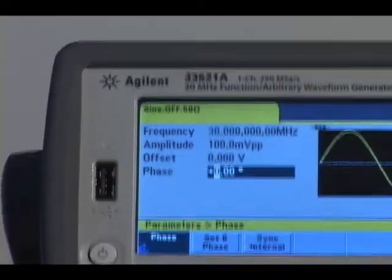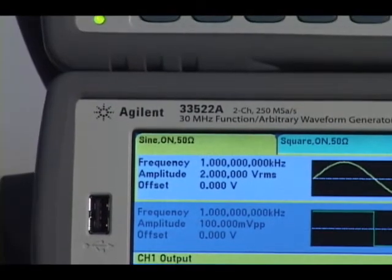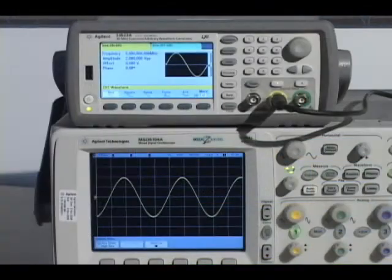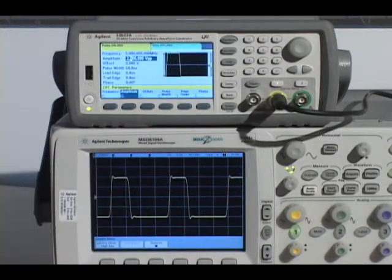As a result of the internal 250 mega-sample per second and 16-bit sample rate, you get excellent amplitude accuracy and frequency stability, and you get a full 30 MHz bandwidth for sine, square, and pulse waveforms.